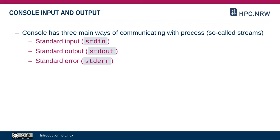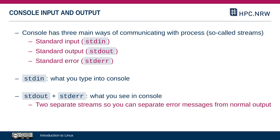The console has three so-called streams: standard input, standard output, and standard error. Standard input is what you type into the console. Standard output is what a command will output, if it outputs anything. The standard error stream is where programs output their error messages. By default that will also be the console output, but they are two separate streams — you can use that to separate error messages from regular output.